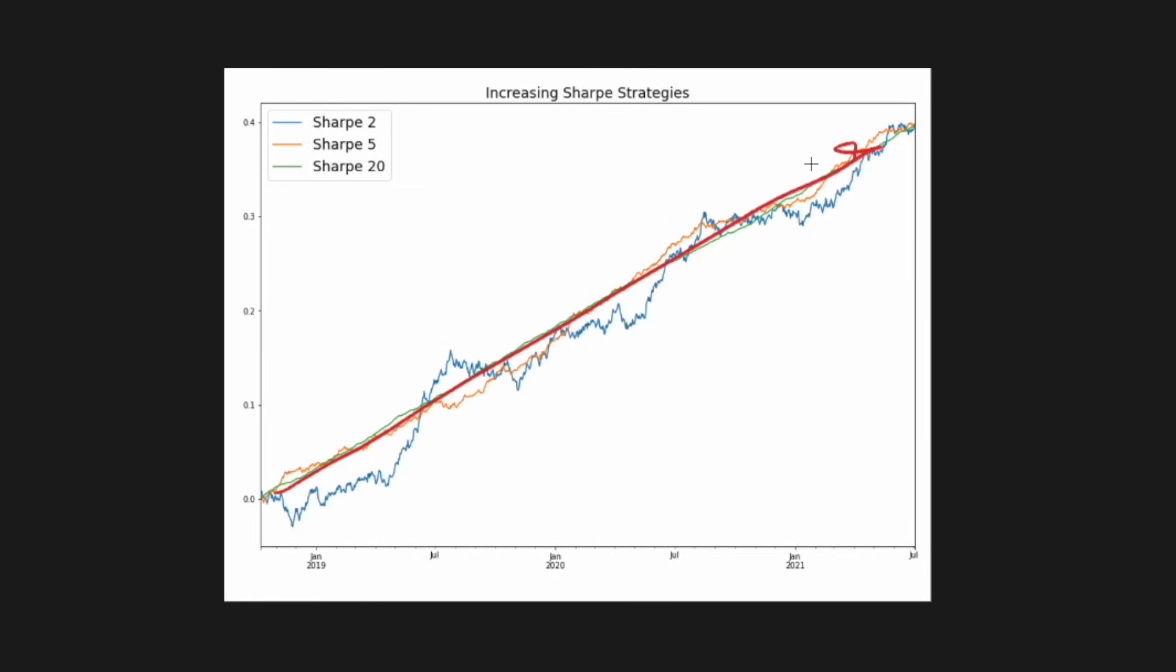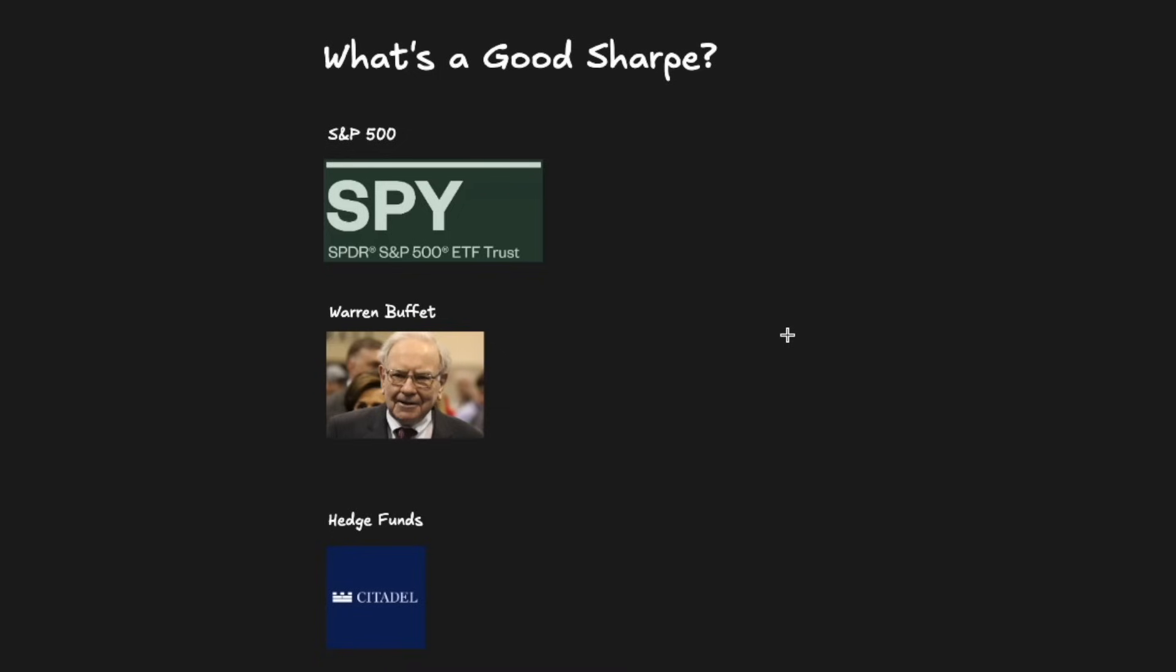So if a 20 Sharpe is a bit unrealistic, what's an actual realistic good Sharpe ratio? Well, the trailing 20-year Sharpe of the S&P 500, as measured by SPY (an ETF that tracks the S&P 500), is around 0.45. Warren Buffett, one of the most famous investors in the world, has been able to beat the market for a long time and has a Sharpe ratio of around 0.75. Good hedge funds, however, have Sharpes in the 2+ range, and that should really be our goal.